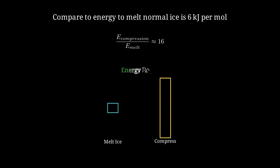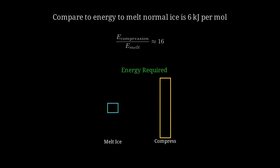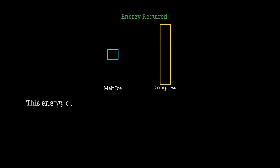This chart shows the dramatic difference in energy requirements. Creating superionic ice requires far more energy than simply melting normal ice. In actual planets, this enormous energy comes from gravitational compression as the planet's mass squeezes the interior.